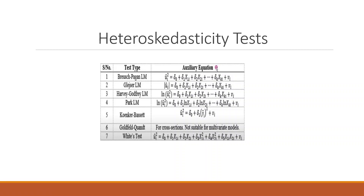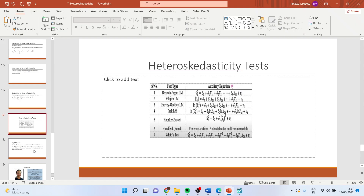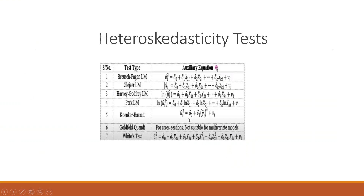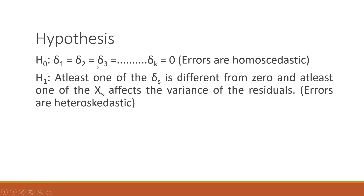The popular tests are the Breusch-Pagan test, where we model: mu_i squared equals delta_0 plus delta_1 * x1_i plus delta_2 * x2_i — so we try to model this error term. Another test is the White test. The null hypothesis is: delta_1 = delta_2 = delta_3 = 0, meaning errors are homoscedastic. The alternative is that at least one of the deltas is different from zero — at least one of the x variables affects the variance of the residuals, meaning errors are heteroscedastic.